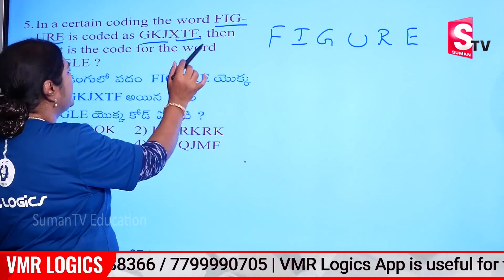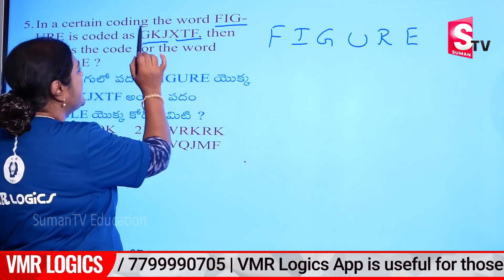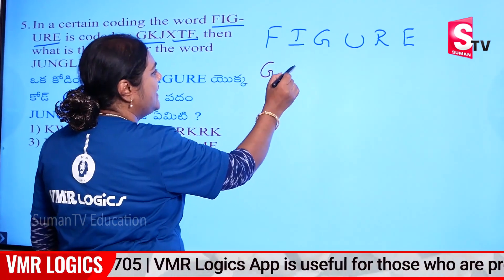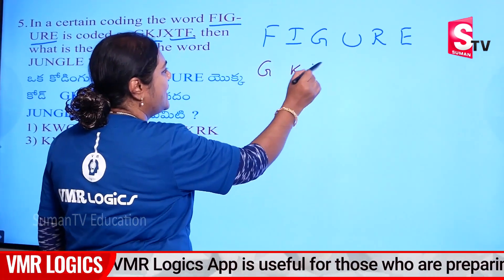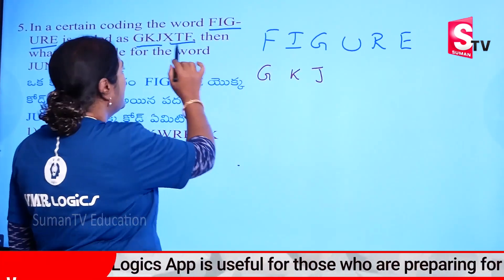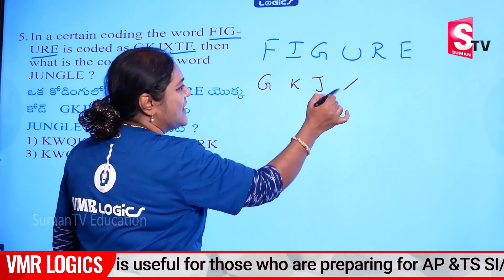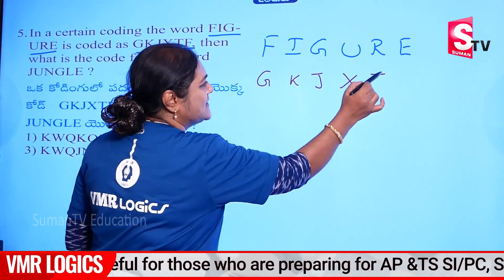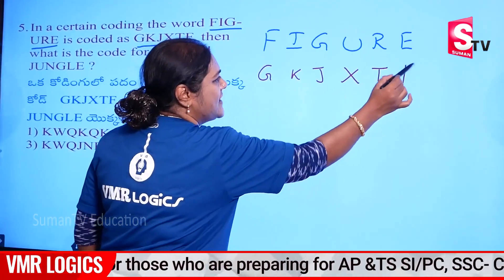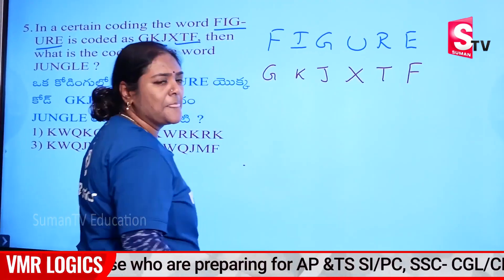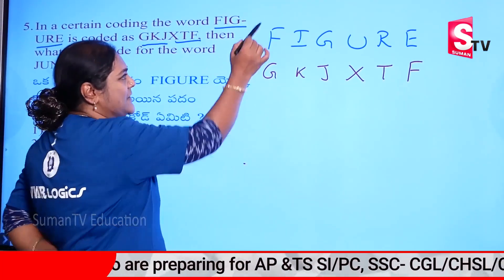Here it is: G, K, J — G, K, J — X, T, F — X, T, F. Okay? Now let's see.